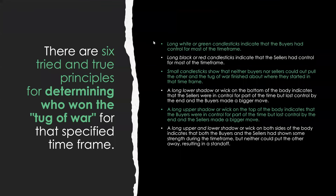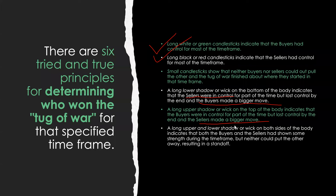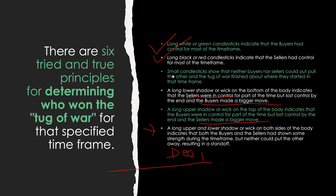There are six tried-and-true principles for determining who won the tug of war. Long white or green candlesticks indicate buyers had control. Long black or red candlesticks indicate sellers had control. Small candlesticks show neither could pull out the win and finished about where they started. A long lower shadow indicates sellers were in control, but buyers made a bigger move at the end. Conversely, a long upper shadow means buyers started strong but sellers made a bigger move. A long upper and lower shadow on both sides indicates both showed strength but neither could pull it out — this brings us to the doji.